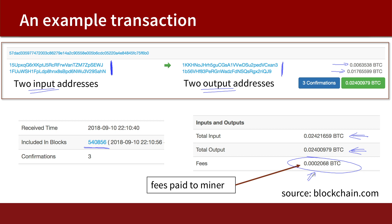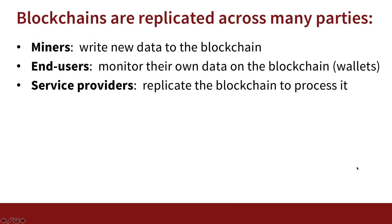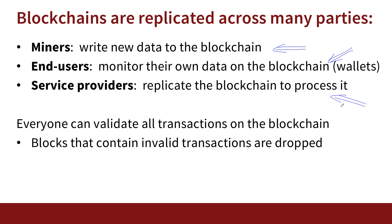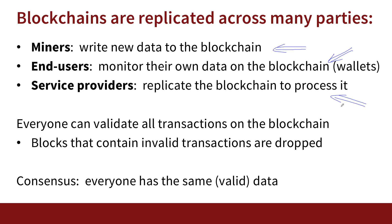From every transaction embedded in a block, the miner collects fees — so if there are 1,000 transactions in a block, the miner collects 1,000 fees. It's important to remember that the blockchain is replicated across many parties: miners write to the blockchain, end users monitor their own state, and service providers process blockchain data. Everyone can validate transactions; invalid blocks are immediately dropped, and everyone agrees on the same data placed on the blockchain.